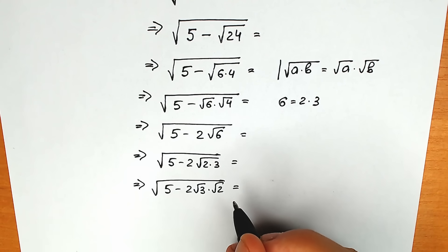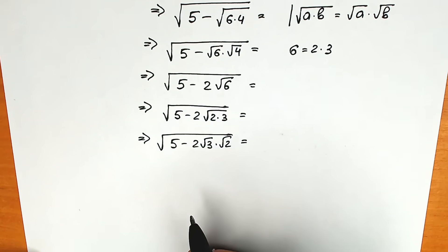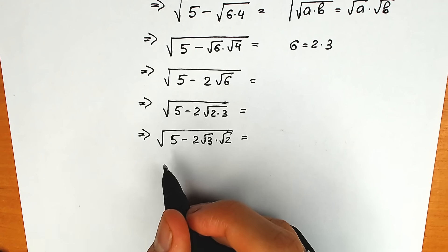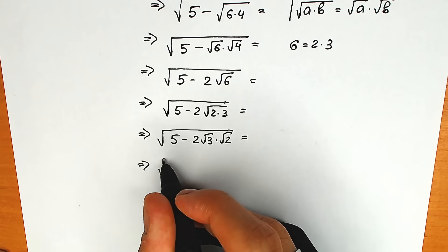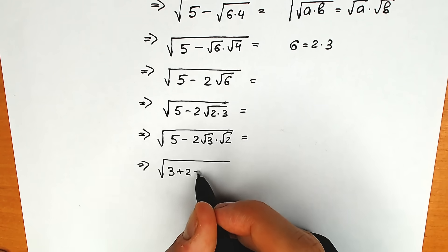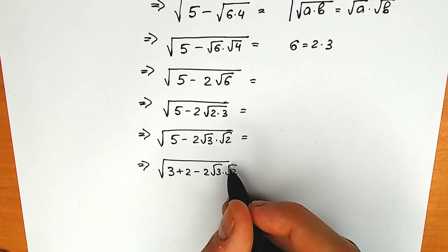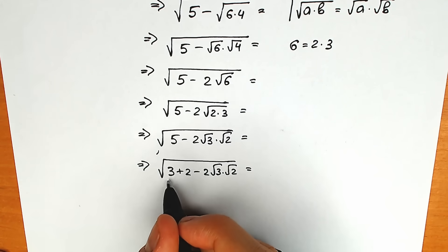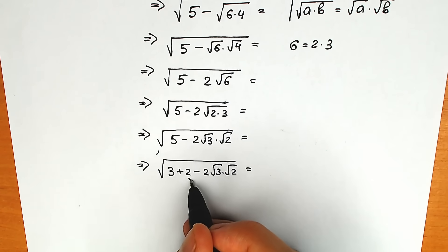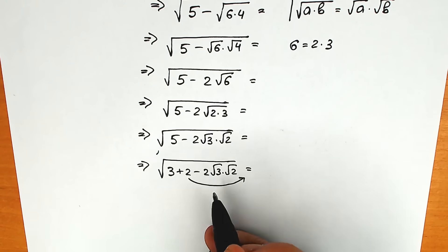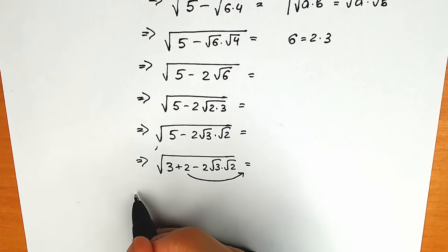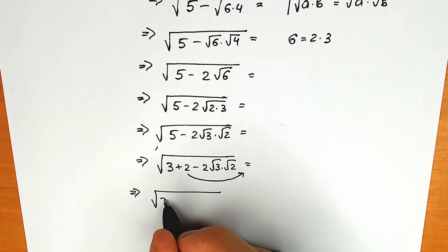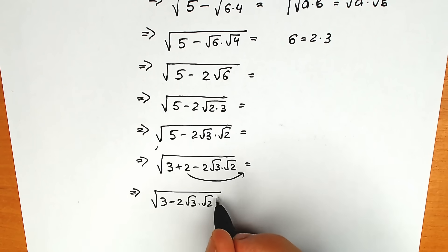What we're going to do next? Instead of 5, let's write 3 plus 2 — this changes nothing since 5 equals 3 plus 2. So we have square root of 3 plus 2 minus 2 times square root of 3 times square root of 2. Let's rearrange: on the second position we write minus 2 times square root of 3 times square root of 2, and then plus 2.